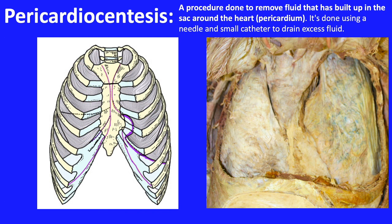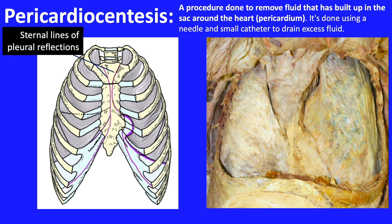Patients suffering cardiac tamponade need to be treated immediately. We use pericardiocentesis — a procedure that removes the fluid built up in the pericardial cavity using a needle and a small catheter. The real concern is where to introduce the needle so as not to damage vital structures. On the left panel, we have a drawing of the thoracic cage with the sternal lines of pleural reflections labeled to highlight the mediastinal extent of the reflections. The bare area of the pericardium is indicated both in the drawing and in the dissection to the right.